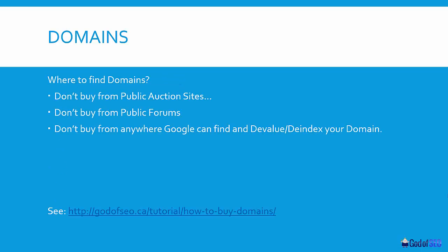Where do I find these domains? Don't buy them from public auction sites, don't buy them from public places — basically don't buy them from anywhere where Google can find and then devalue or de-index those domains, because that's a really stupid idea. If you've gone and bought 100 sites off GoDaddy Auctions within the last month, then obviously Google can just look at where those sites came from without even having to look at the sites themselves. You can have a look at my how-to-buy-domains tutorial linked in the YouTube description and resources box below.